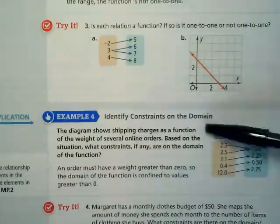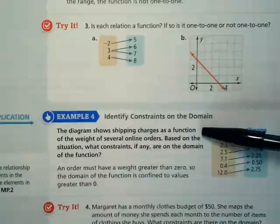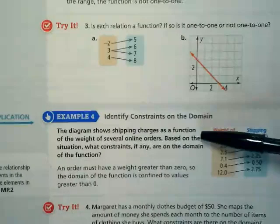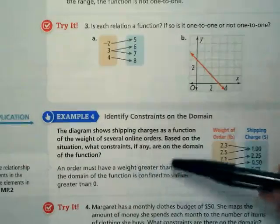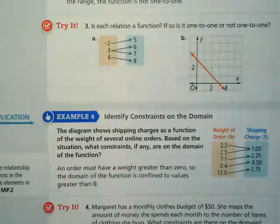So let's look at this problem here. The diagram shows shipping charges as a function of the weight of several online orders. Based on the situation, what constraints, if any, are on the domain of the function?